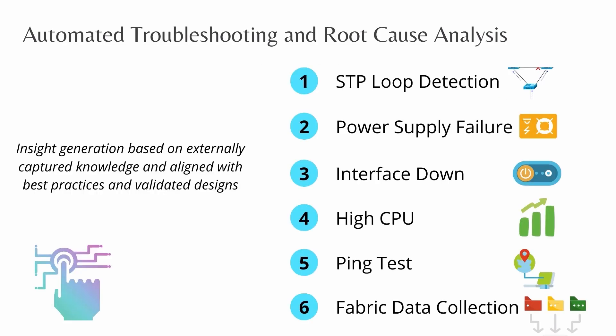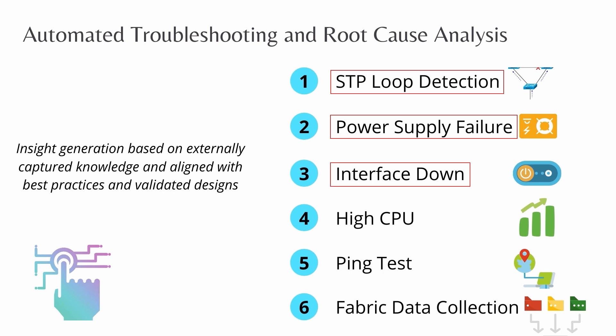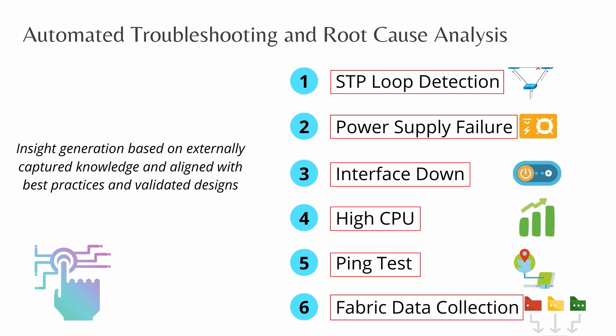Currently Cisco DNA Center has 6 MRE use cases. They are: planetary loop detection, power supply failure, interface down, high CPU, ping test, and fabric data collection.